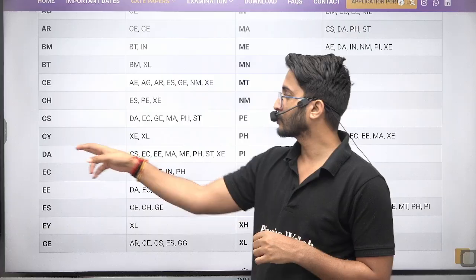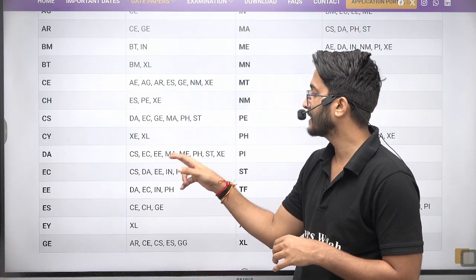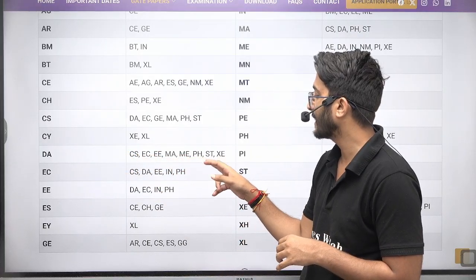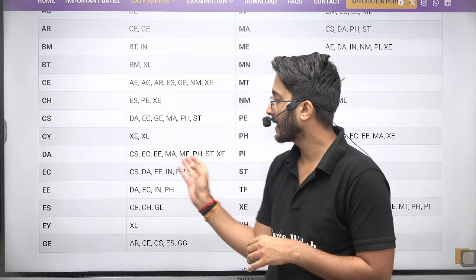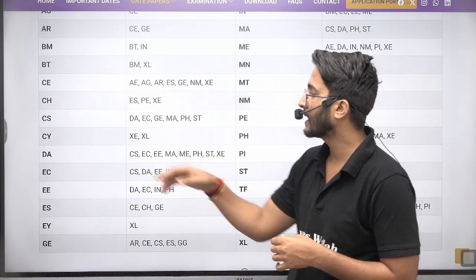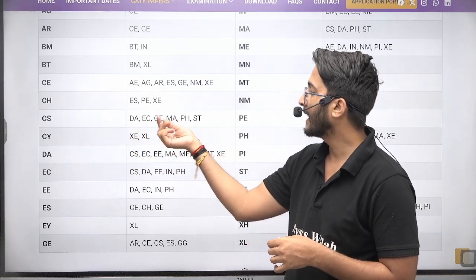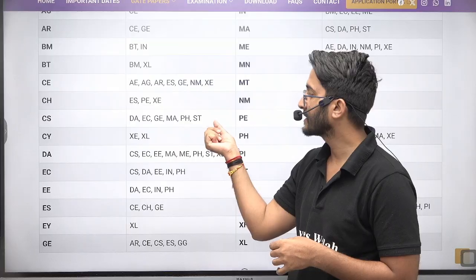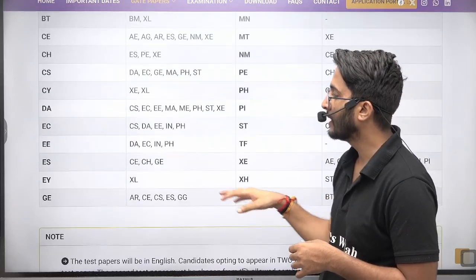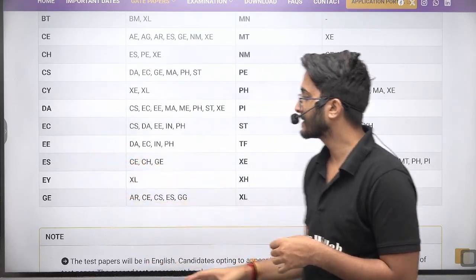DA, if you are choosing as a first subject, then CS, EC, Electrical, MA, ME, PH, ST, XE, these are the combination you can choose as a second paper. Similarly for CS you can check DA, EC, GG, MA, PH, ST. Out of this, any discipline subject you can choose.